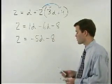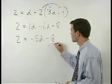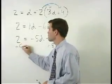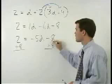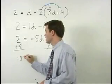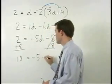Now just add 8 to both sides of the equation. And we get 10 equals negative 5d. Divide both sides by negative 5.